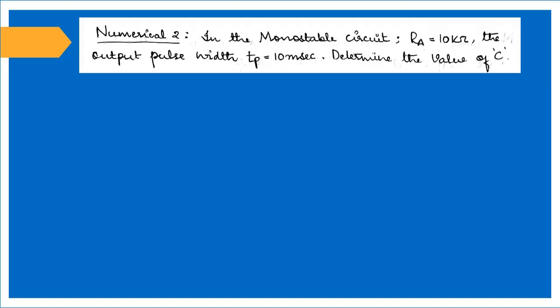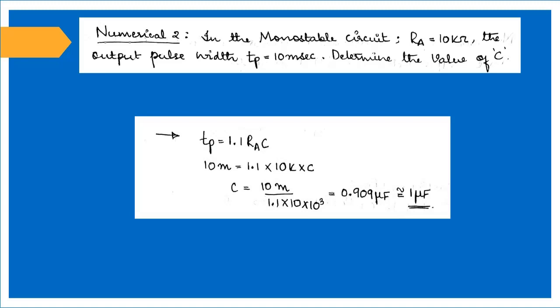Let us solve the second numerical. A monostable multivibrator circuit is given with resistance Ra and output pulse Tp. We need to calculate the capacitance value.